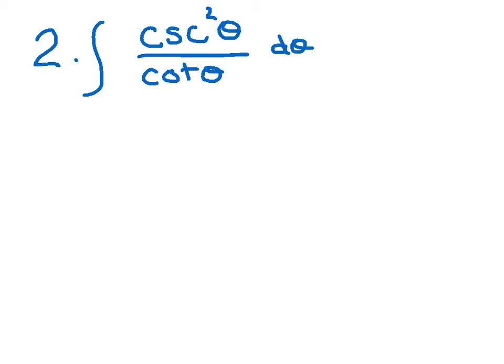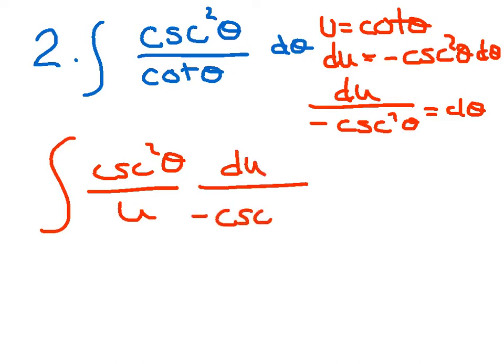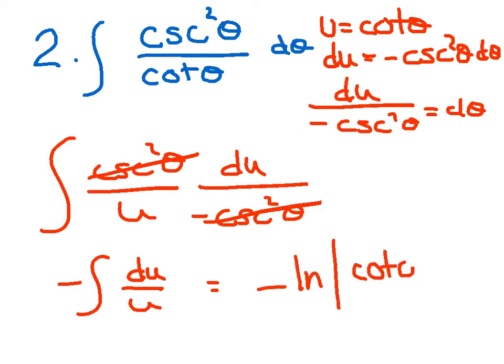Alright, number two. The integral of cosecant squared theta divided by cotangent theta d theta. So, I'm going to go ahead and do my u sub right off the bat. And hopefully, this denominator sticks out to you. The derivative of cotangent is negative cosecant squared. Of course, that's negative cosecant squared theta. We'll substitute it in. So, I get my cosecant squared theta over u, du over negative cosecant squared theta. My cosecant squared thetas are going to cancel. Pull out my negative, and I've got again that du over u, which is equivalent to negative ln. My u is cotangent of theta plus c.